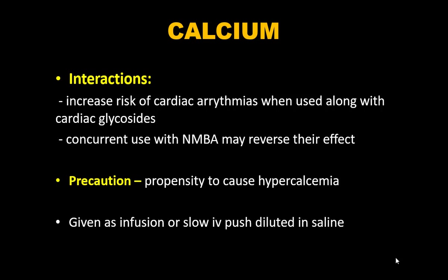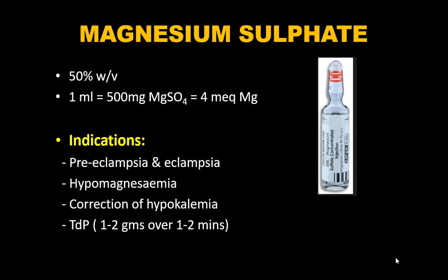Calcium interactions: in patients on digoxin, it can cause systolic arrest. Concurrent use with neuromuscular blocking agents can cause reversal. Precaution: propensity to cause hypercalcemia, so continuous monitoring is required. Calcium should be given as an infusion or slow IV push, diluted. Only calcium gluconate — not calcium chloride — should be given as an IV push.